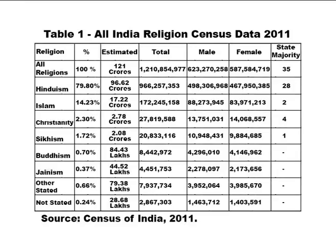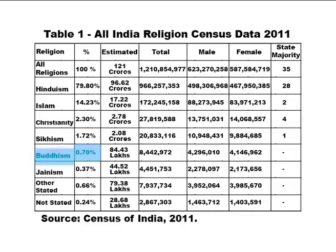The term religious diversity implies multiple religions dwelling together in a territory. Table 1 shows all India religion census data 2011. The data depicts that Hindus are a religious majority with 79.80% of population, followed by Islam at 14.23%, Christianity at 2.30%, Sikhism at 1.72%, Buddhism at 0.70%, Jainism at 0.37%, and other religions constituting 0.66% of the total population. Religious diversity is well seen through these figures.